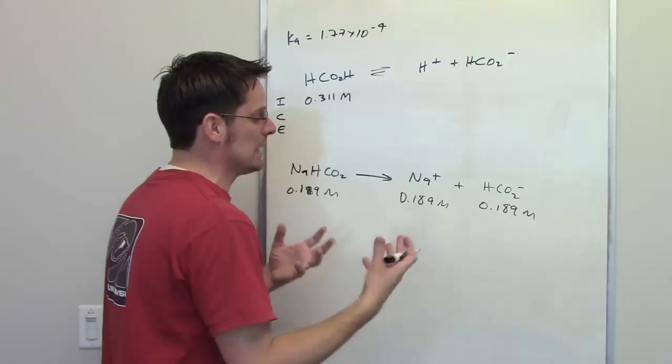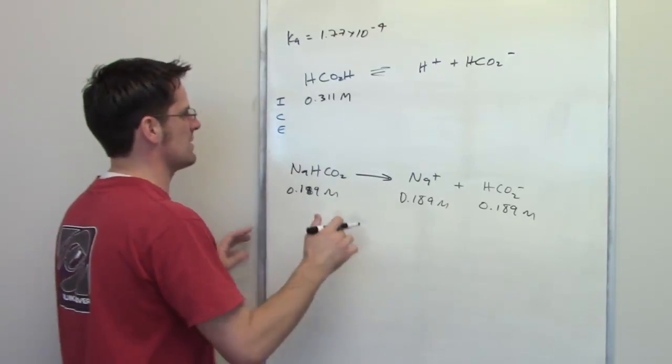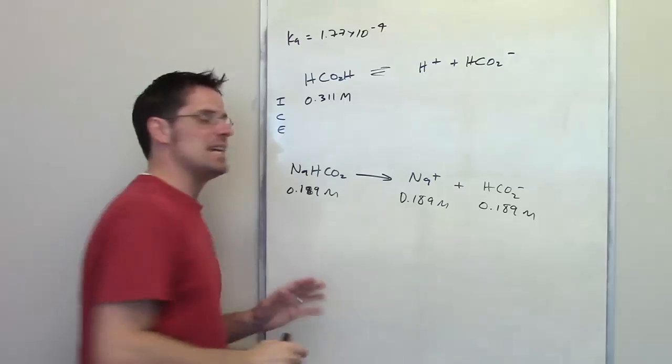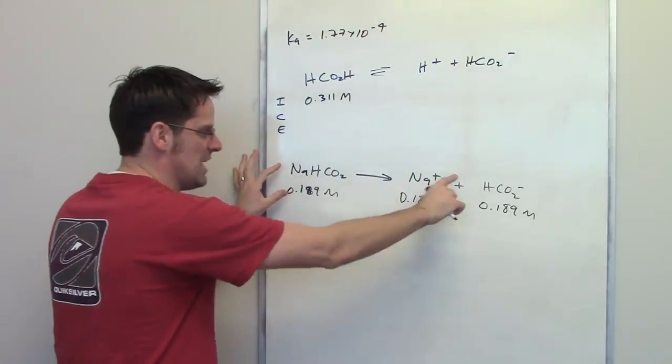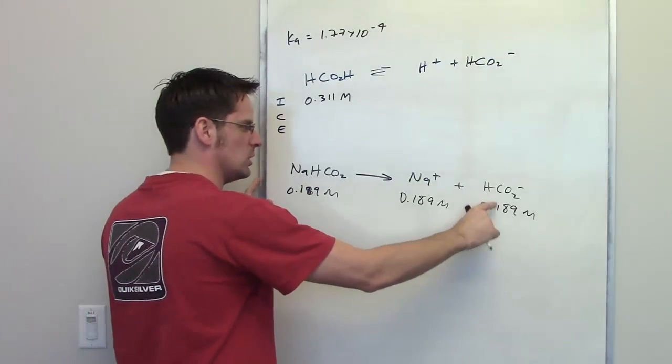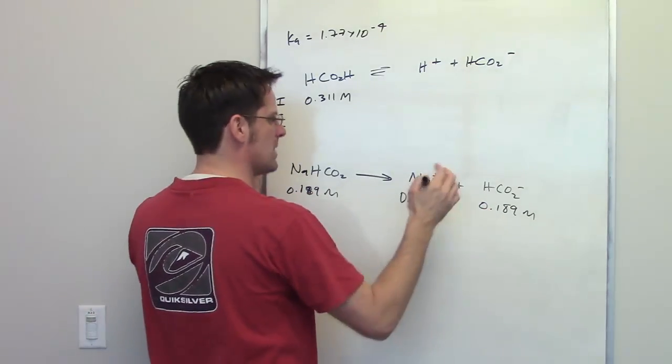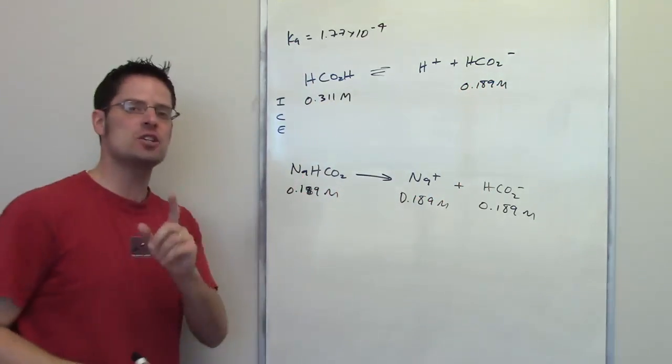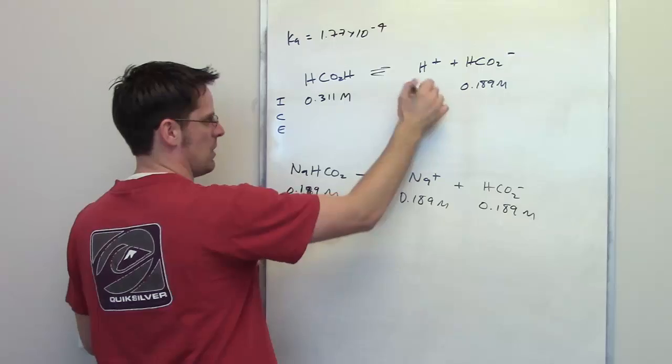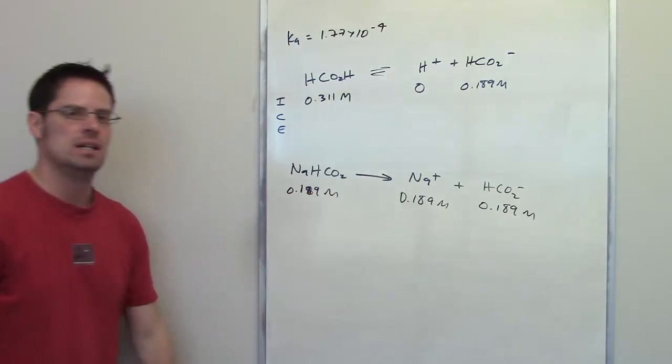The one way, really, in which the common ion effect changes things is that the initial concentration of this thing is not zero. Normally, it would be zero if we didn't have this thing in the solution, but because we have this thing in solution, the initial concentration right at the beginning becomes 0.189 molar. The initial concentration of H+, however, remains zero. Got it?